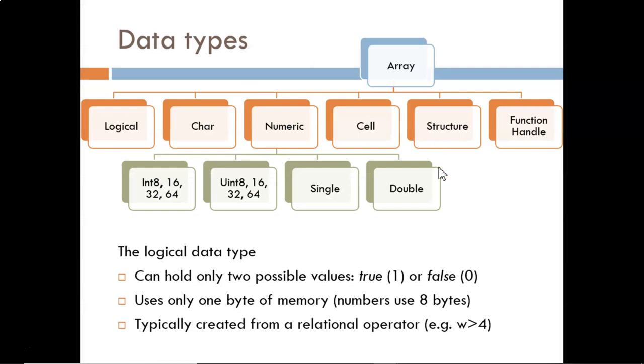This is the chart we have seen before that highlights the various data types in MATLAB. On the left, we see the logical data type. This type can hold only two possible values, true or false. True is represented as a 1, and false as a 0. This data is usually created from some type of relational operator. For example, w<4 would return either a true or a false depending on the value of w.